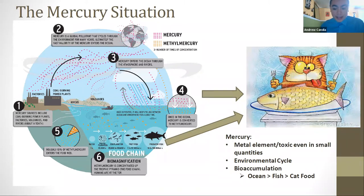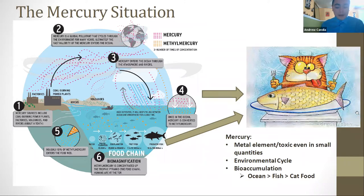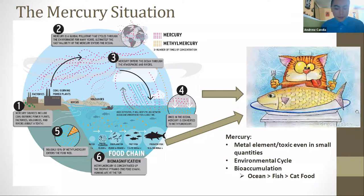The answer is mercury. Many cat food brands have fish as their primary ingredient. One important characteristic of mercury is its ability to cycle throughout many parts of the environment. Mercury can bioaccumulate up the food chain — it enters the ocean, goes from smaller to bigger fish, and then into the cat food, where we encounter mercury levels inside cat food.